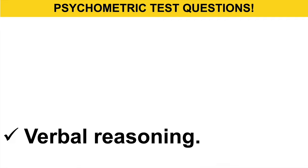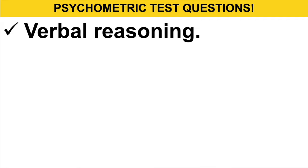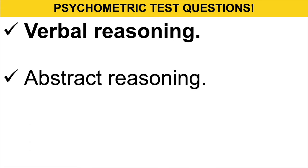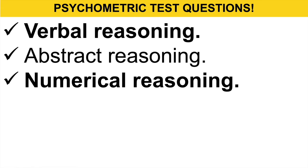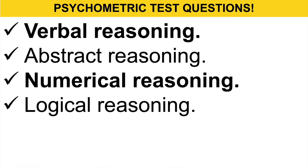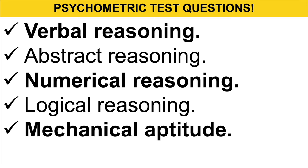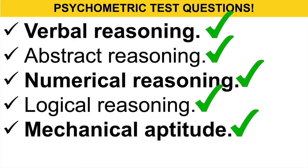During a psychometric test, there are usually the following types of test questions. You will have to answer verbal reasoning, abstract reasoning, numerical reasoning, logical reasoning, and mechanical aptitude test questions. To help you prepare fully for your psychometric test, we will cover each and every one of those different test questions today.